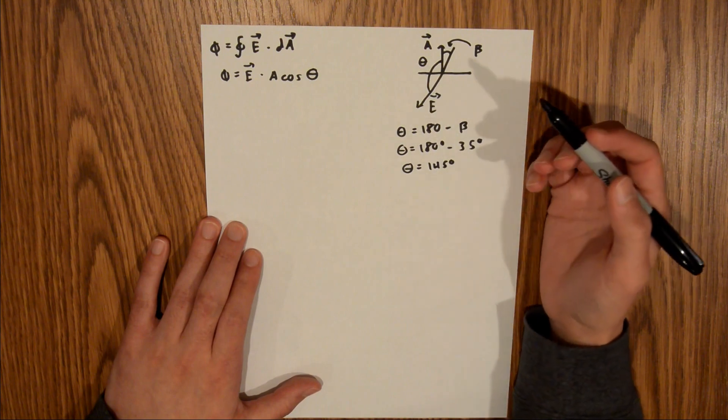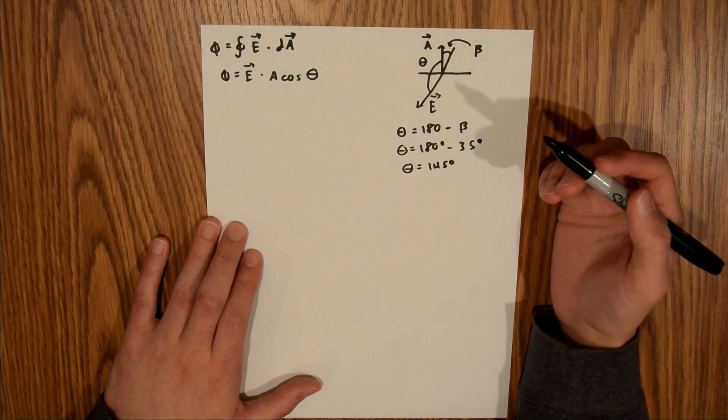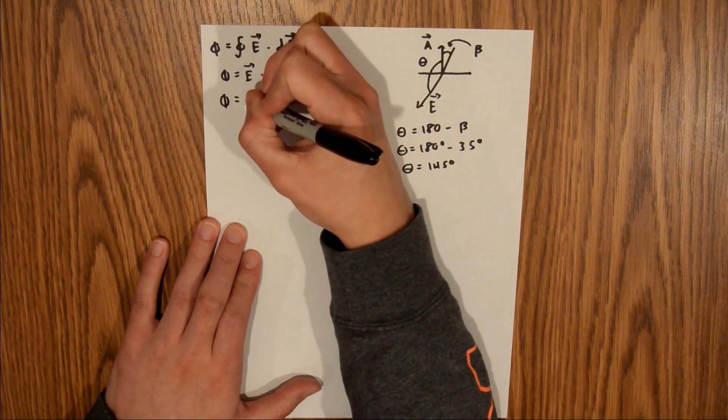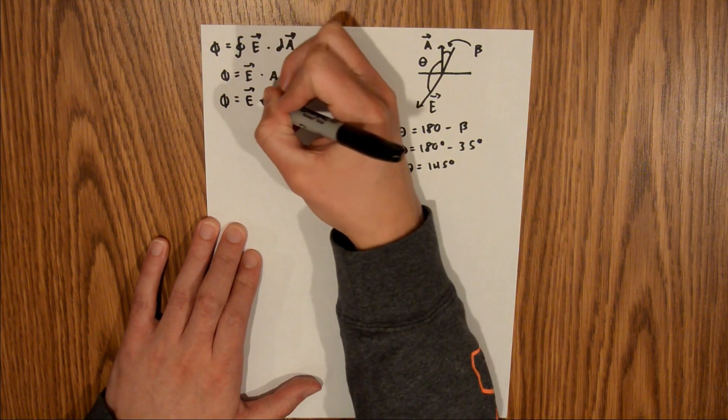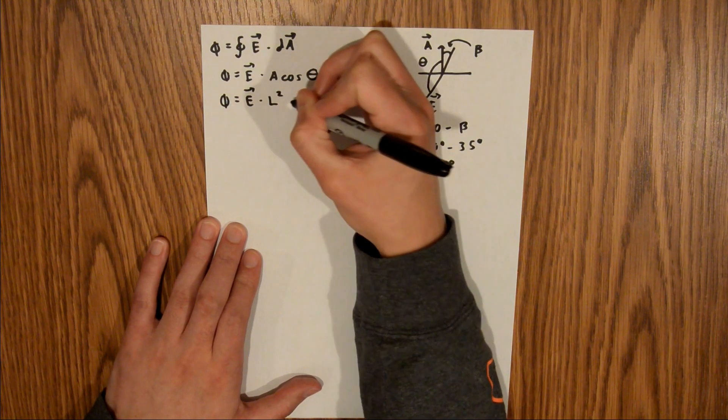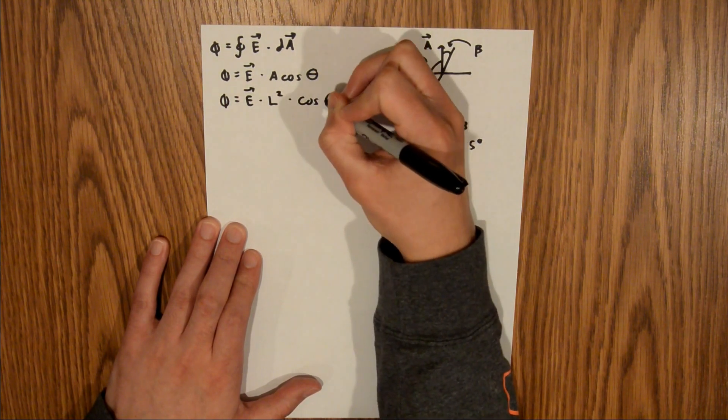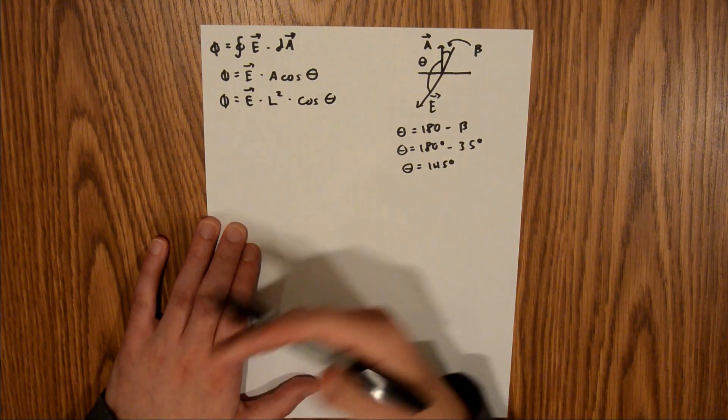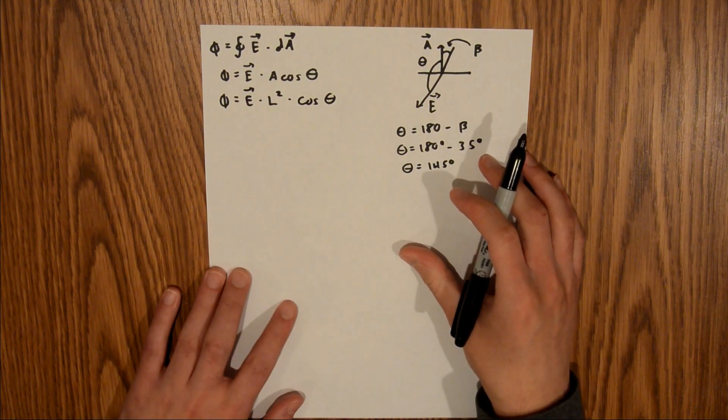Since we have a square surface, and the area of a square is the length of one side squared, we can rewrite this as electric field times the length of a side squared times the cosine of theta. We are given the length in the problem, so we have everything we need to solve it.